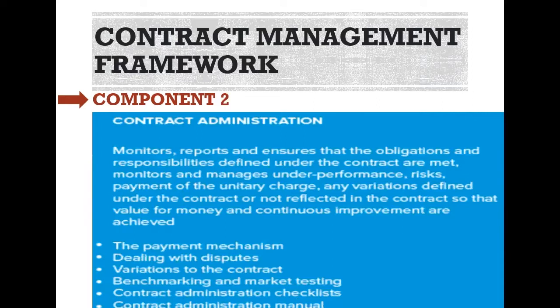Component two: Contract administration. This component monitors, reports, and ensures that the obligations and responsibilities defined under the contract are met. It monitors and manages underperformance, risk, payment of the unitary charge, and any variations defined under the contract to ensure that value for money and continuous improvements are achieved. Topics include: the payment mechanisms, dealing with disputes, variations to the contract, benchmarking and market testing, contract administration checklist, and contract administration manual.